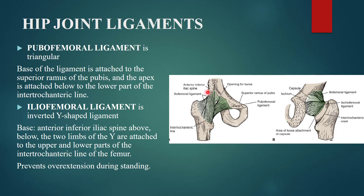The iliofemoral ligament is an inverted Y-shaped ligament. Its base is attached to the anterior inferior iliac spine of the ilium — hence 'ilio' — and the two limbs of the Y are attached to the upper and lower parts of the intertrochanteric line of the femur. This ligament prevents overextension during standing.